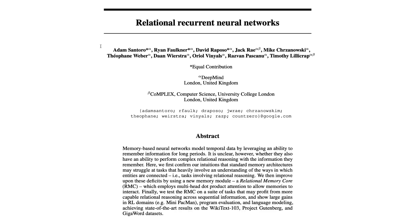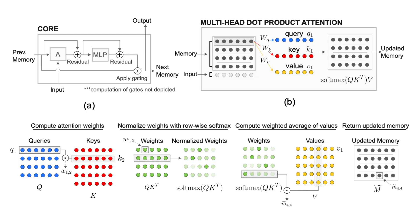The next one is the paper 'Relational Recurrent Neural Networks,' which argues that recurrent neural networks model temporal data by leveraging an ability to remember information for long periods, but it is unclear whether they also have the ability to perform complex relational reasoning with the information they remember. Therefore, they propose the Relational Memory Core Module, which puts the multi-head dot product attention mechanism on the memories of the recurrent neural network, improving its performance on relational reasoning tasks. Definitely give this paper a go if the topic interests you.